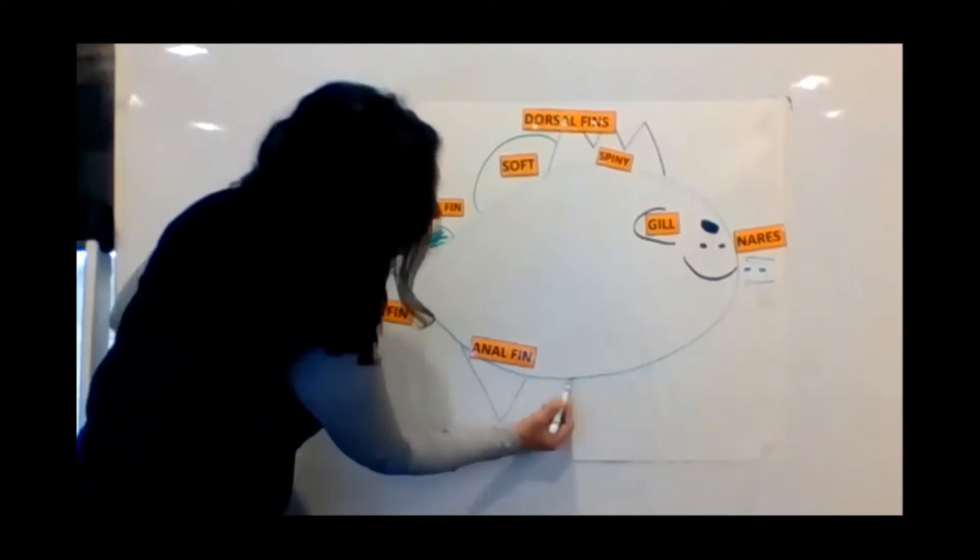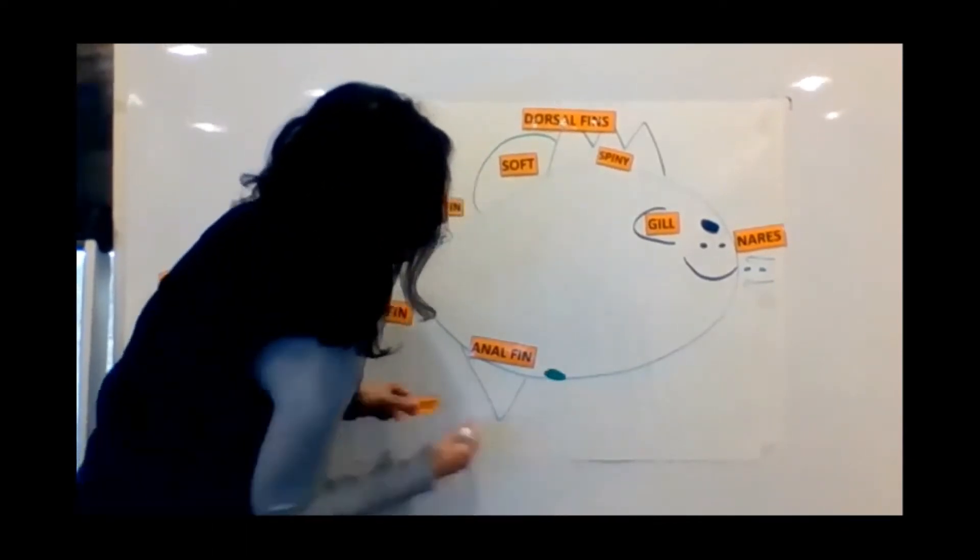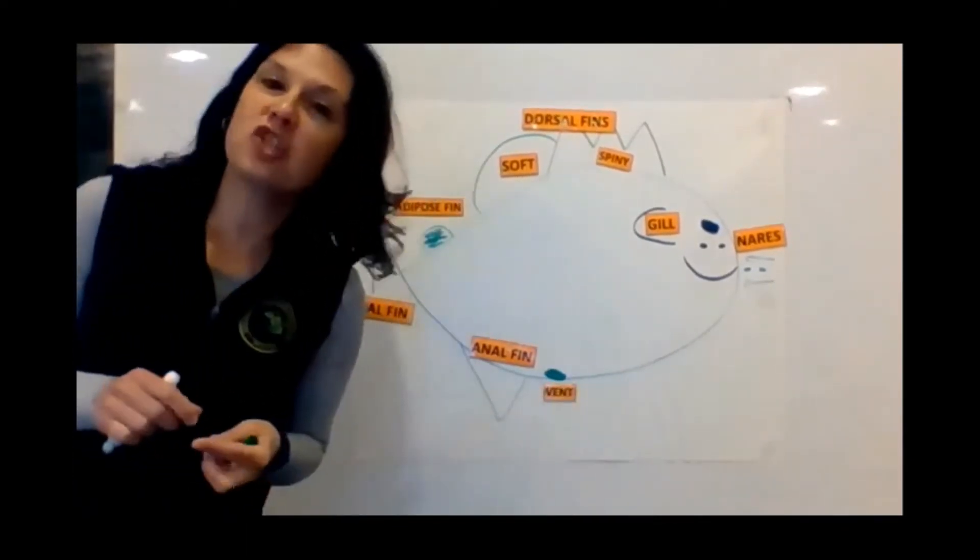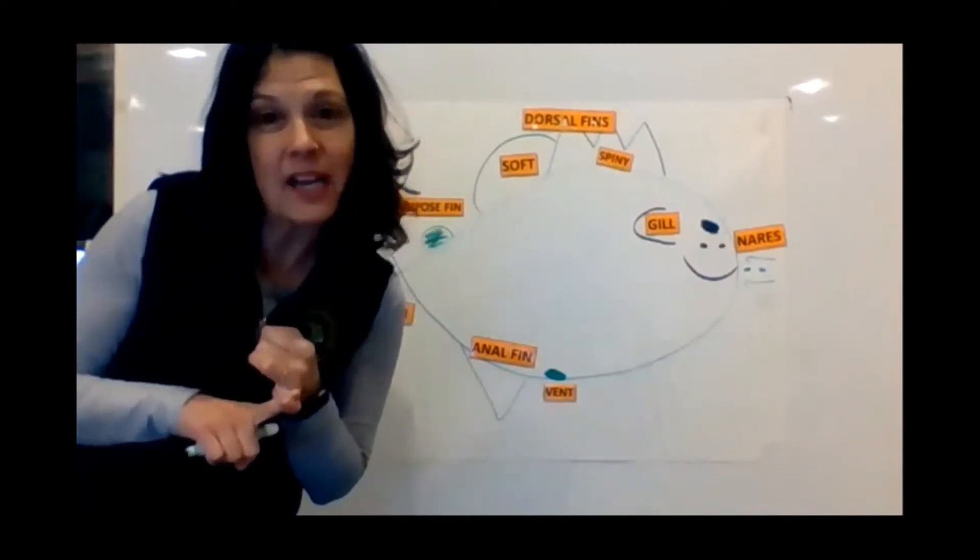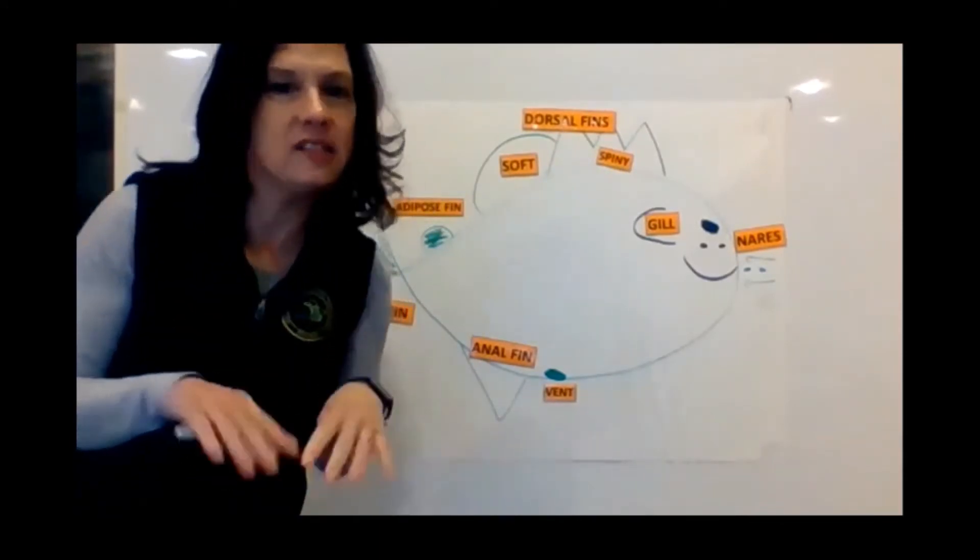In front of that, we're going to put a little circle. This is the vent for the fish. That's where the fish waste exits the body and also where the milt or eggs are going to exit the body.